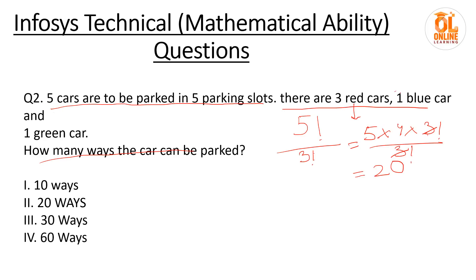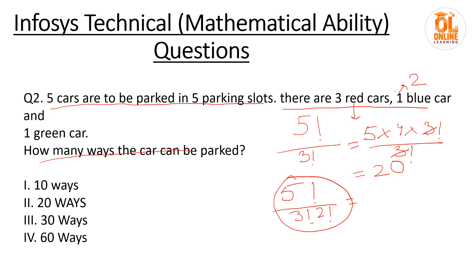So the answer is 5! ÷ 3! = 20 ways. If there were two blue cars as well, you would divide by 3! and 2! both. Whenever you have multiple identical items, arranging them gives the same result, so you divide by the factorial of the count of each identical group. The final answer here is 20.